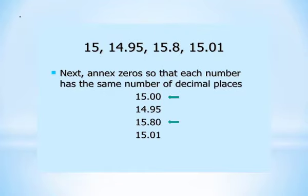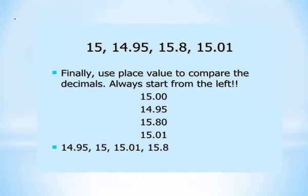The next step is to write zeros so that each number has the same number of decimal places. If necessary, write one or more zeros to the right of the last digit so that all the decimals have the same number of decimal digits. We rewrite the numbers as: 15.00, 14.95, 15.80, and 15.01.